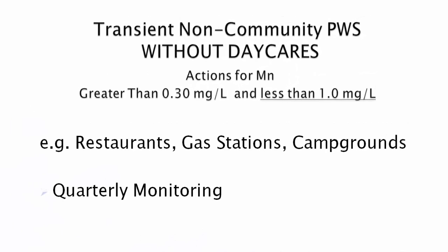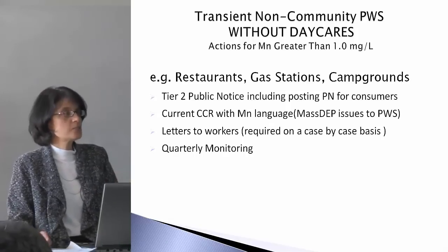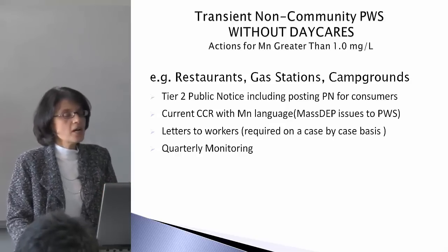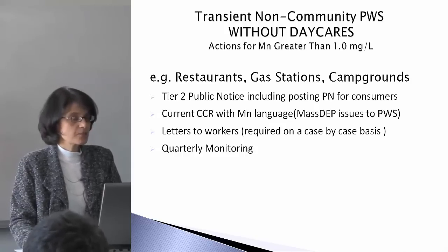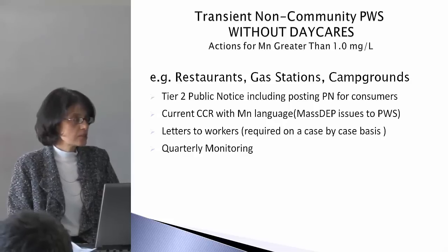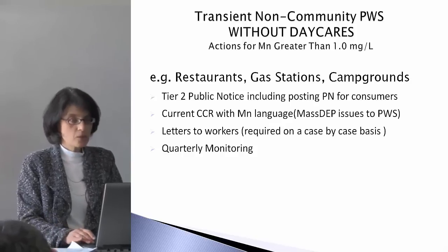For transient systems without daycares — such as restaurants, gas stations, or campgrounds where people are transient — just quarterly monitoring is required until the level is greater than 0.3 up to 1.0. If the level is greater than 1.0 in transient non-communities without daycares, and we're mentioning daycares because of the infant concern as one of the most susceptible populations, then there is a Tier 2 public notice, posting of the public notice for consumers, a letter to workers on a case-by-case basis, and quarterly monitoring.